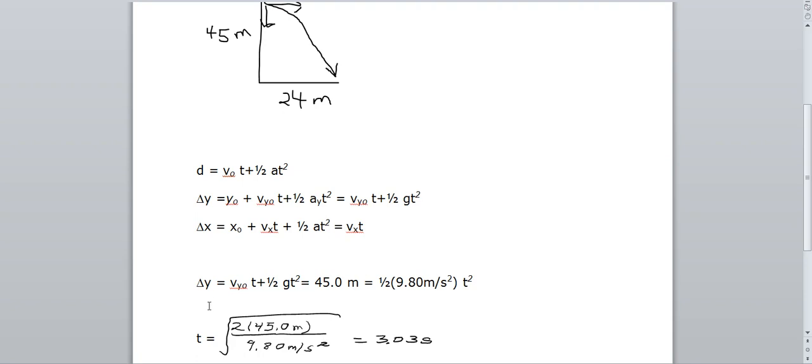Going back to delta y, because we have to find t. We plugged in your values for y, one half gt squared. We solved for t here and we got 3.03 seconds as your time it took for the projectile to hit the ground.